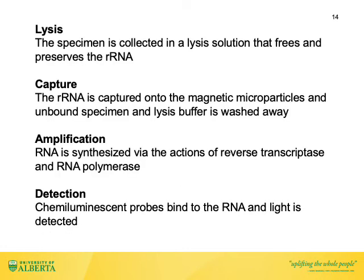Now that we have discussed the reagents, let's put the assay together. Broadly speaking, the assay can be divided into four steps: lysis, capture, amplification, and detection. The first step is to lyse the prokaryotic cells to release their cellular contents, including the target ribosomal RNA; the lysis solution also preserves the rRNA. In the capture step, a polyadenosine sequence at the 5' end of the capture oligo binds to the magnetic particle, while the 3' end binds the target ribosomal RNA. A magnetic field is applied to immobilize the particles, and unbound specimen and lysis buffer are washed away. This is followed by amplification of bound ribosomal RNA by reverse transcriptase and RNA polymerase, and detection of amplification products by labeled DNA probes measuring chemiluminescence.